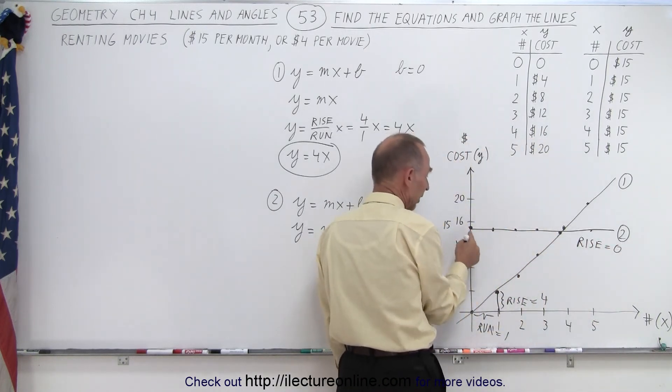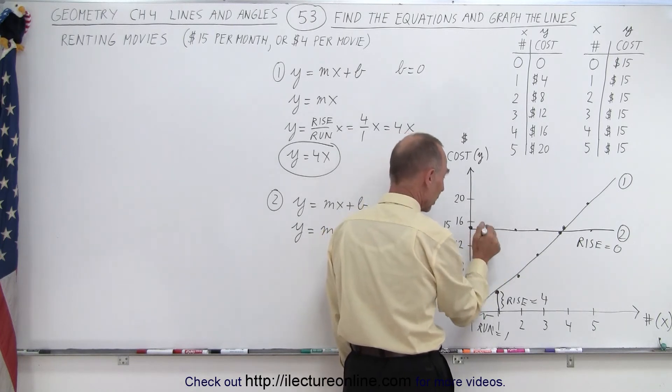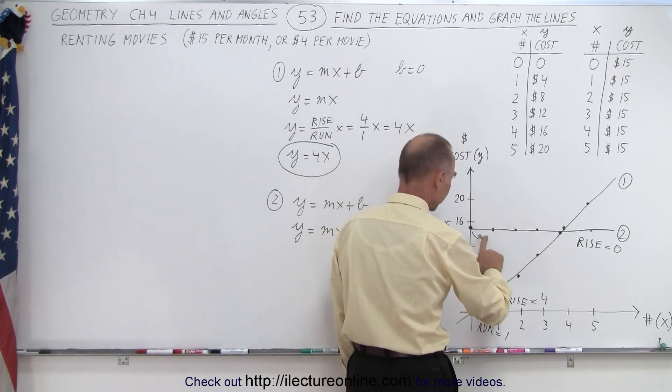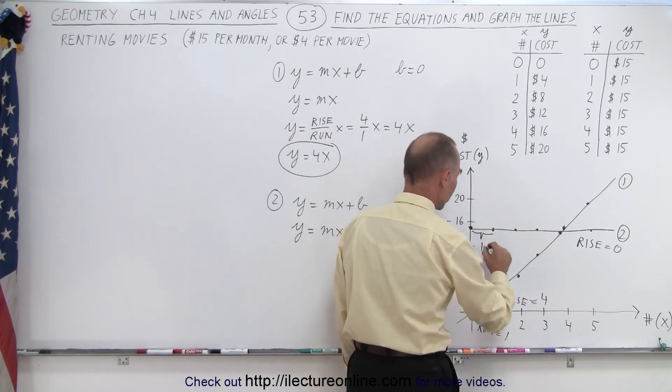The run, I can pick any point. I can go from here to here, or from here to here. I can see that the run, whoops, that's a terrible symbol here. There we go. The run is equal to one. That's the run.